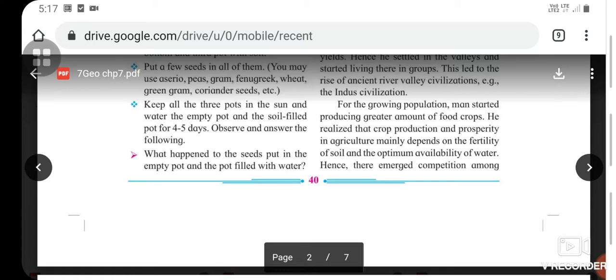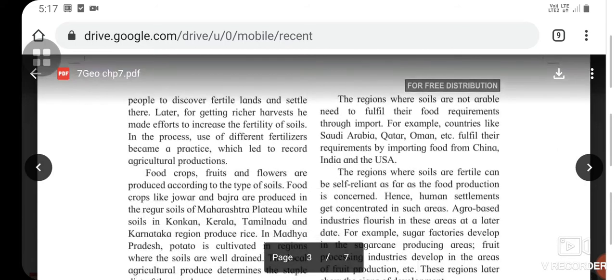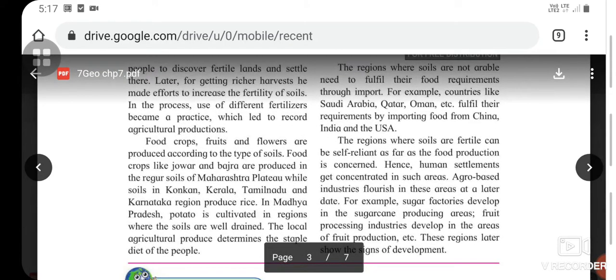There emerged competition among people to discover fertile lands and settle there. Later, for getting richer harvests, he made efforts to increase soil fertility. In the process, use of different fertilizers became a practice which led to record agricultural production. Food crops, fruits, and flowers are produced according to the type of soils.